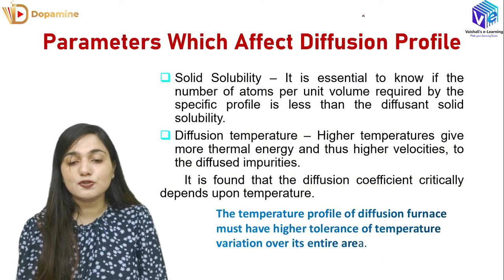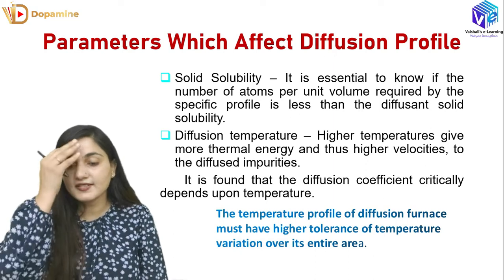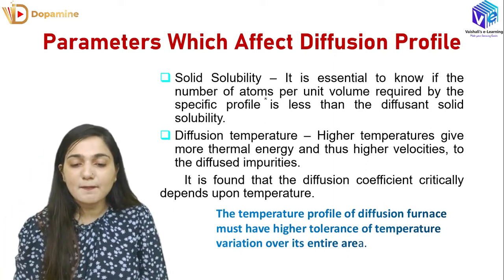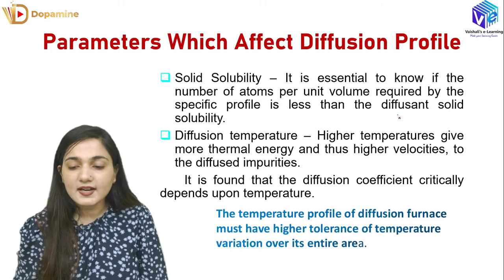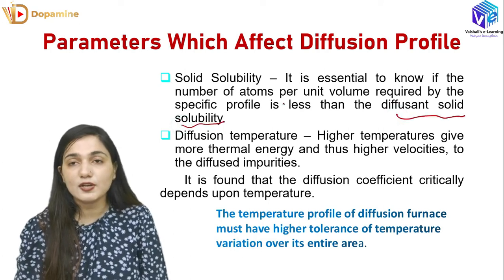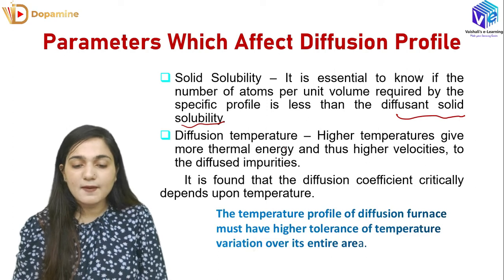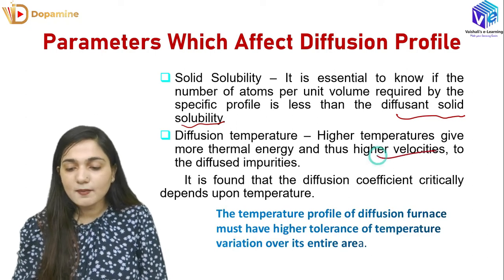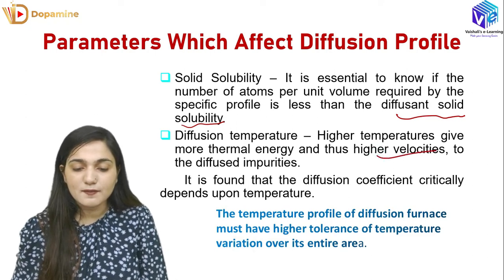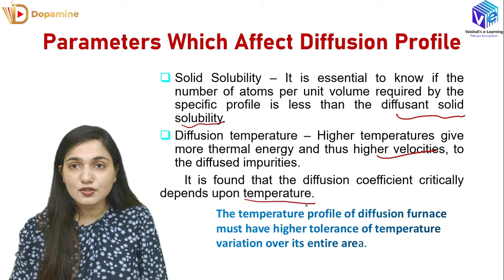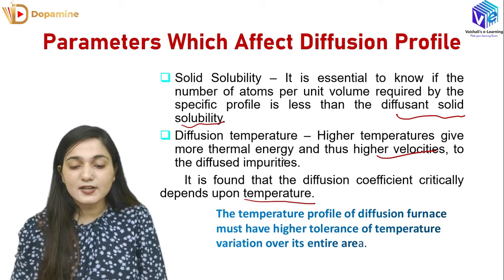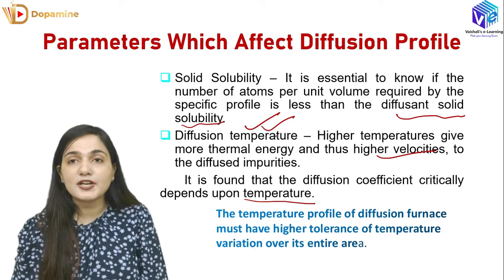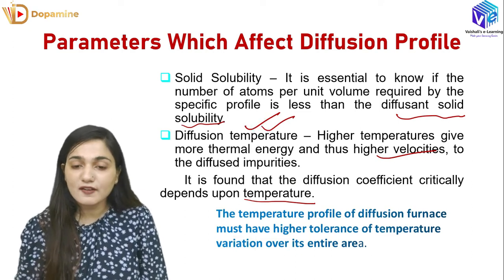There are some parameters which affect the diffusion profile. First is solid solubility, which is the number of atoms per unit volume required by the specific profile — this must be less than the diffused solid solubility. Second is diffusion temperature: at higher temperatures we get more thermal energy, giving the diffused impurities more velocity. The diffusion coefficient is critically dependent upon temperature, so diffusion temperature is a very important parameter.